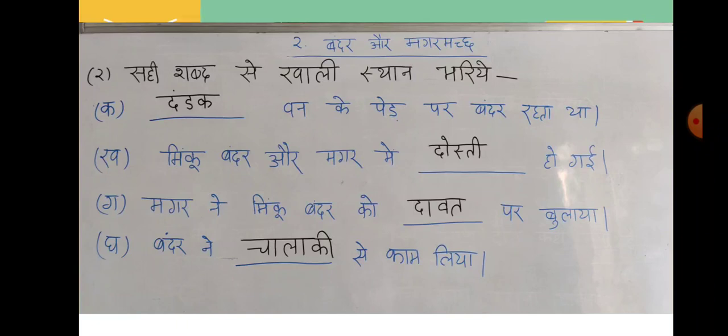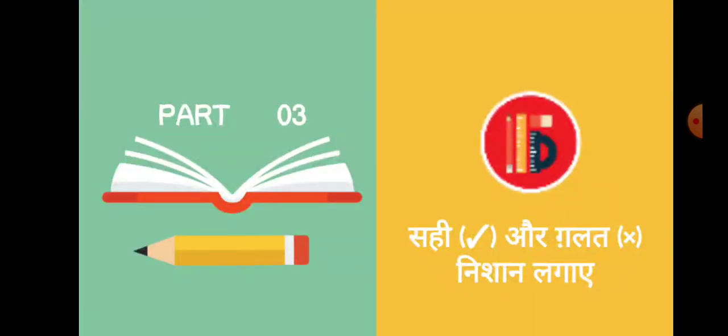अब देखिए — सही और गलत का निशान लगाएं। ख — मिंकू बंदर और मगर में दोस्ती हो गई थी। ग — मगर ने मिंकू बंदर को दावत पर बुलाया। घ — बंदर ने चालाकी से काम लिया। यह हो गया। इसके बाद का है सही और गलत निशान लगाएं।